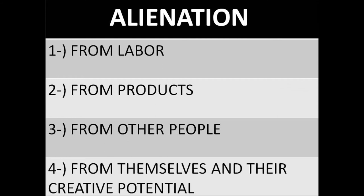4. Workers become alienated from themselves or their creative potential. Although new forms of production create new potential for people to realize their abilities and capacities, the social relations of production based on private ownership frustrate that potential.